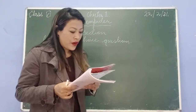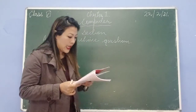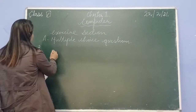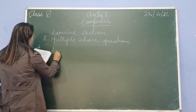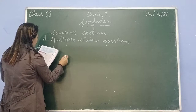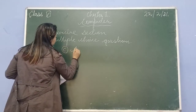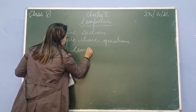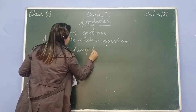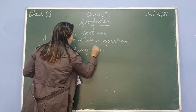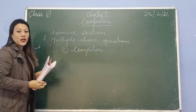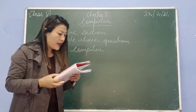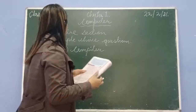For multiple choice question A, number 1, your answer will be C - compiler. Just write down this answer: compiler.